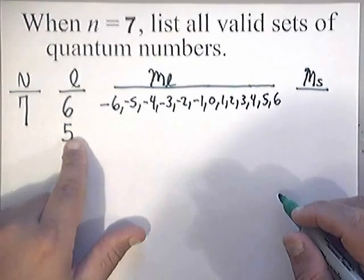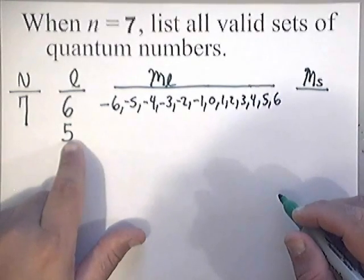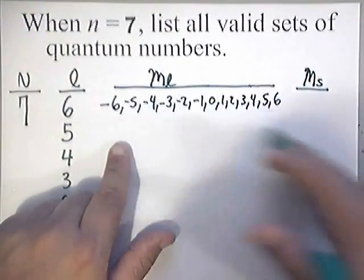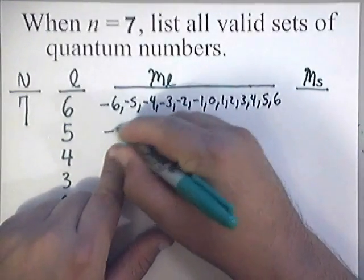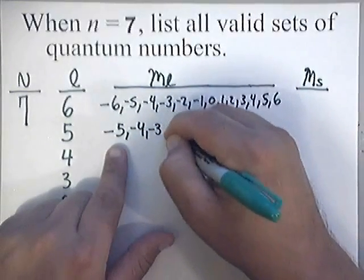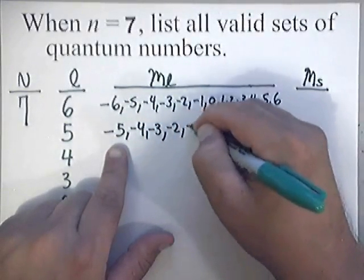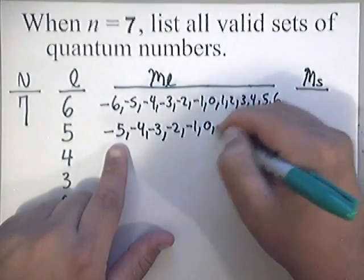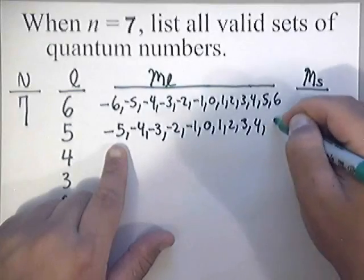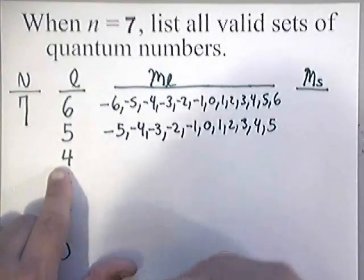Now, if the L value is 5, which is the orbital quantum number, the magnetic quantum numbers can be any of the following numbers. They could be negative 5, negative 4, negative 3, negative 2, negative 1, 0, 1, 2, 3, 4, and 5.